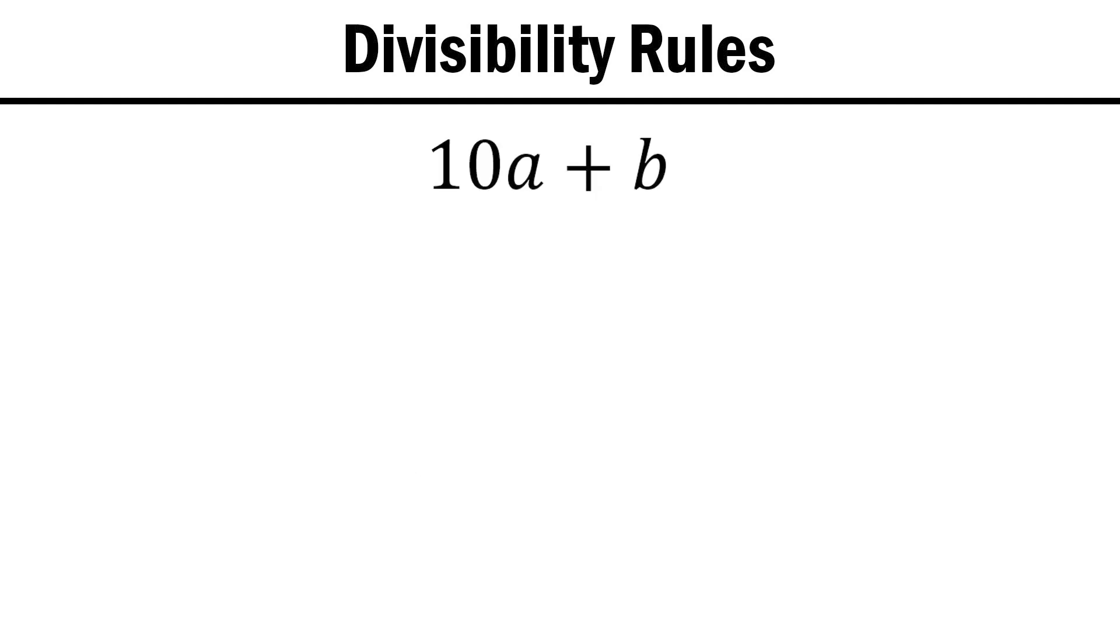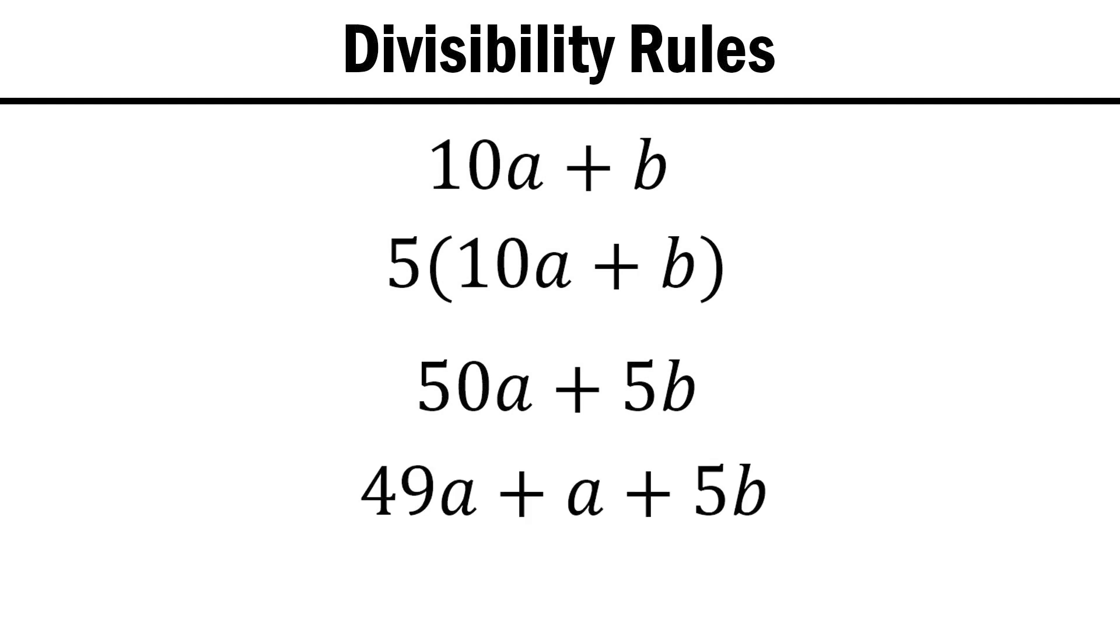The trick here is to multiply by 5. If this expression, 50a plus 5b, is divisible by 7, then 10a plus b is as well. Our next step is to split 50a into 49a plus 1a. We do this because 49 is a multiple of 7.